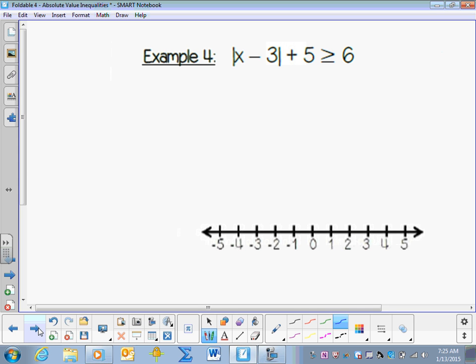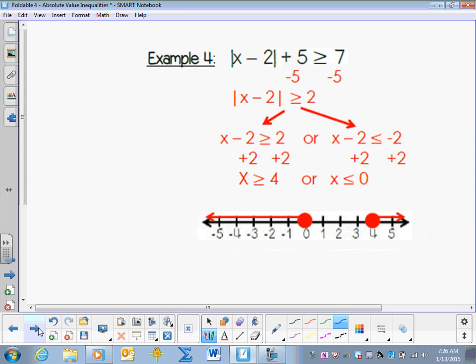Example 4. The absolute value of x minus 2 plus 5 is greater than or equal to 7. Solve that one. So you subtract 5, rewrite, and you get x is greater than or equal to 4 or x is less than or equal to 0.